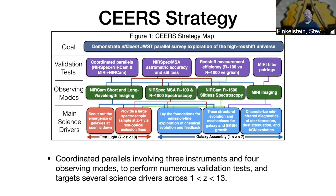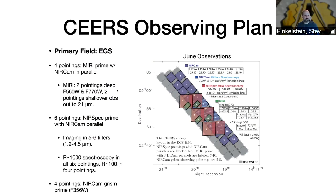Here is one realization of what CEERS may look like. We are going to observe in the Extended Groth Strip field — this is one of the five CANDELS fields. In this diagram, we have 10 NIRCAM pointings. You can see there are two squares per pointing because NIRCAM has two modules, but you get them both at the same time. In each observation, you get a short wavelength filter and a long wavelength filter simultaneously.